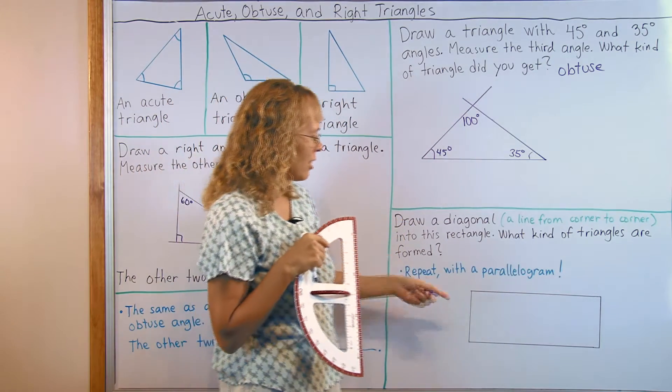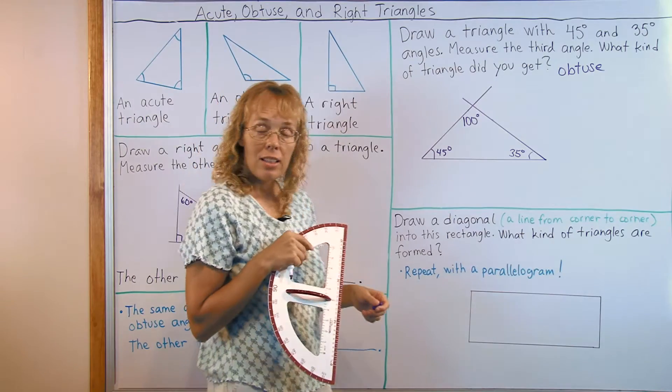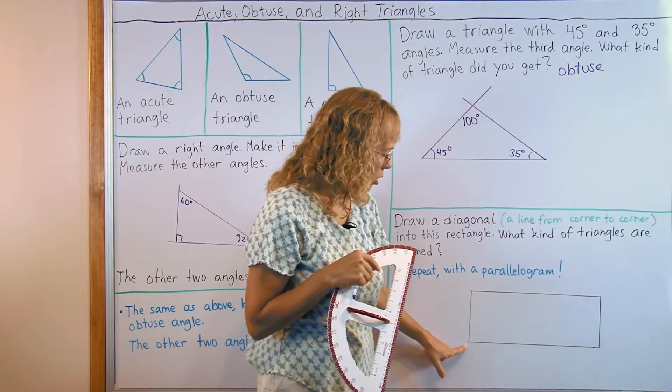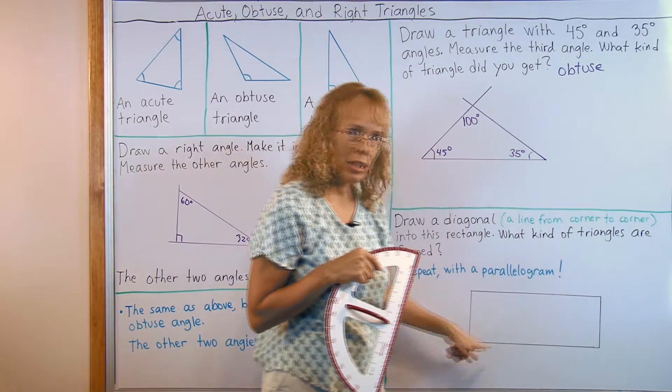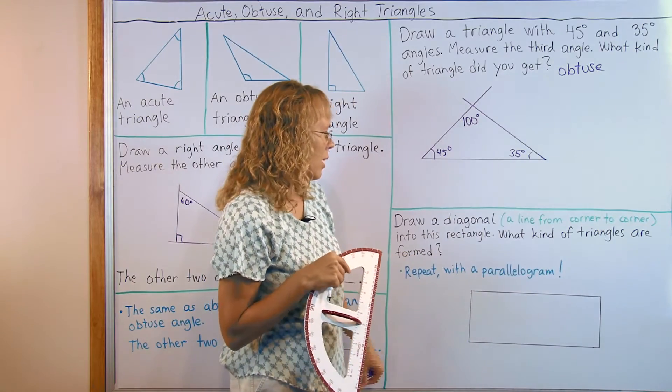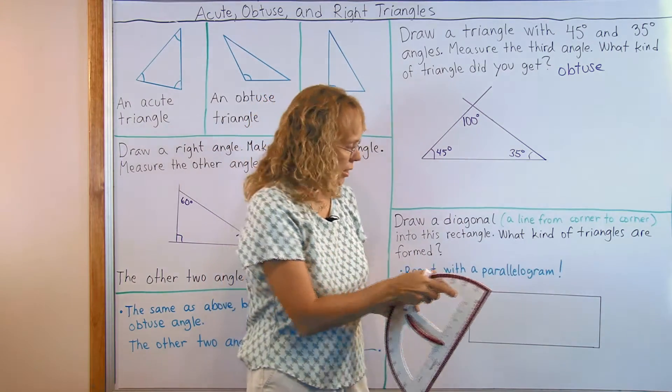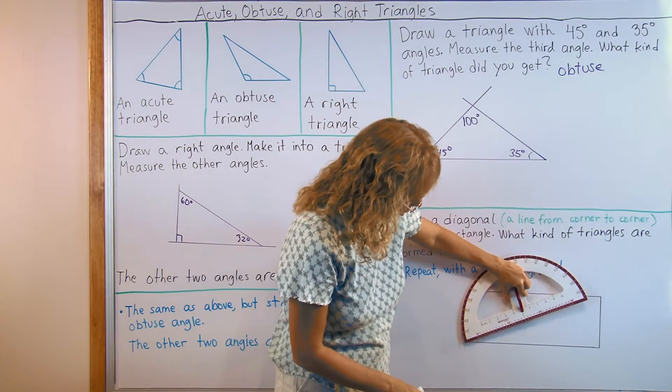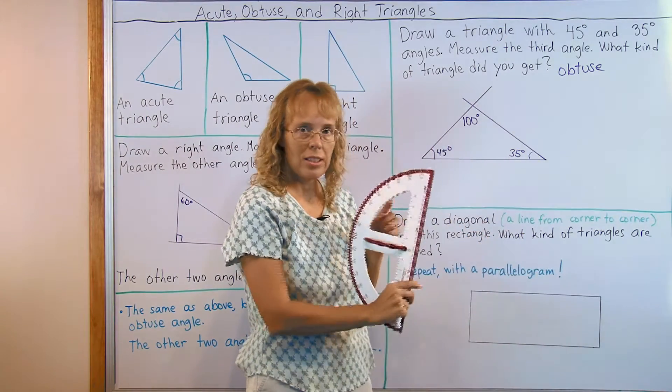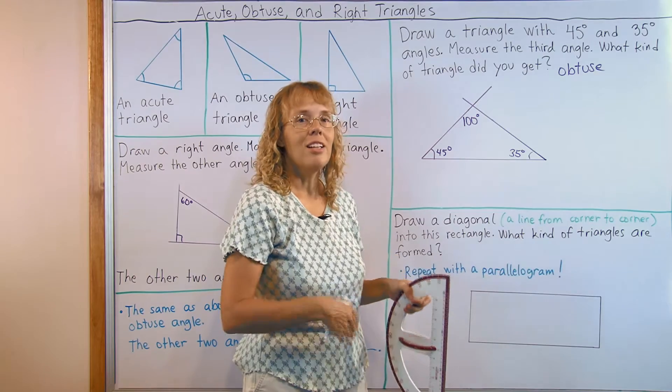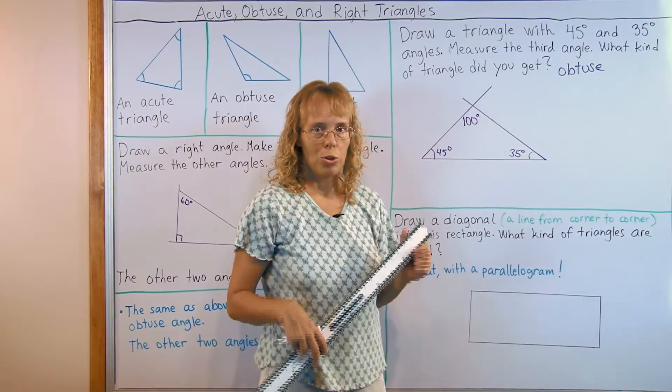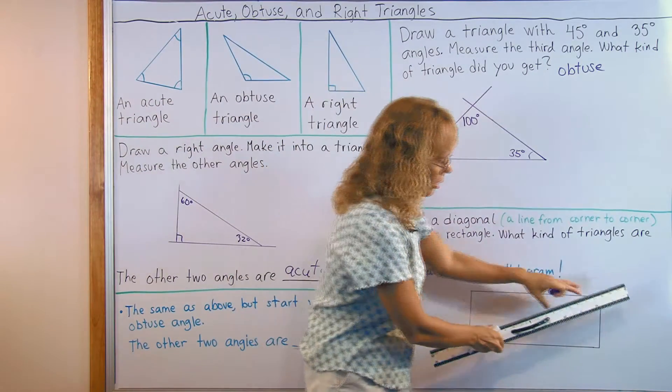Lastly, draw a diagonal into this rectangle. A diagonal is a line from corner to some other corner that goes inside the figure. And then, what kind of triangles are formed? So I basically need to draw a line from this corner to this corner. And this is not long enough, so I'll grab my regular ruler. I'm going to use this, a regular ruler, to draw a line.